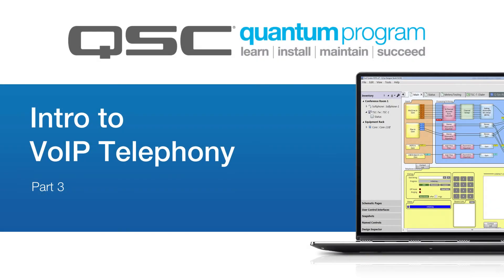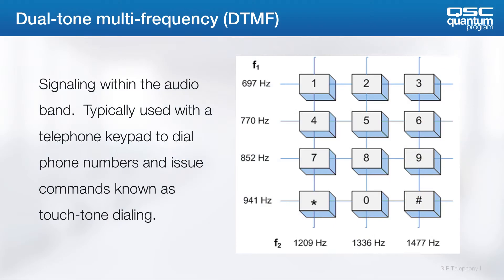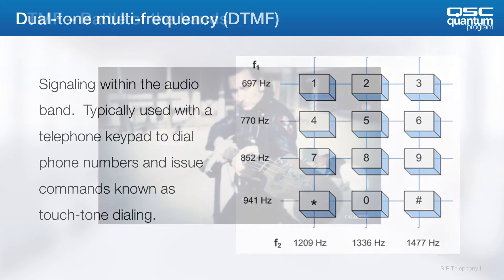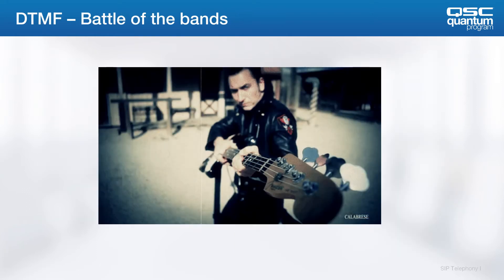Welcome back. DTMF is used for sending numbers and issuing commands when dialing. For example, 697 Hz and 1209 Hz are the two tones that make up the number one. There are two types of tones: in-band and out-of-band.